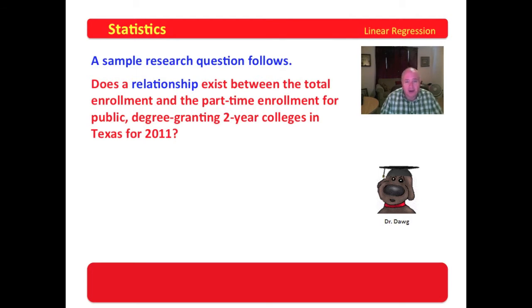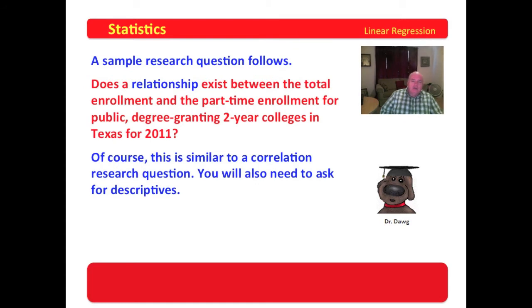I don't know whether the question ought to be asked or not, but that is the question. Now, of course, this is similar to a correlation research question. Notice, does a relationship exist? This is worded exactly like a correlation question. And this is question two. Do you remember what question one was? Correct. You asked for the descriptives first. What are the total enrollments and part-time enrollments for public degree-granting two-year colleges in Texas for 2011? Question two, does a relationship exist? Then you move to the methodology.